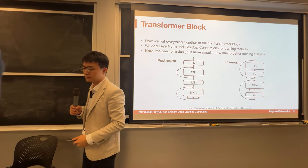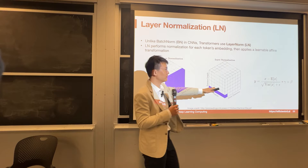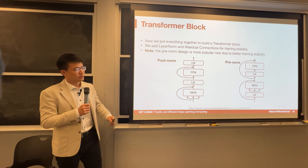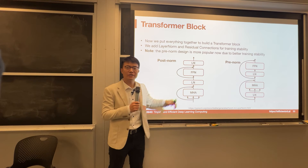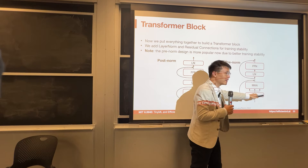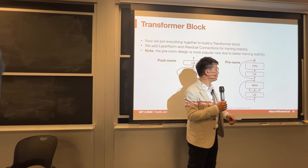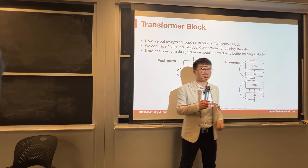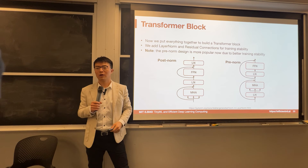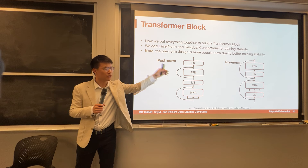The initial transformer used post-normalization: MHA first, then layer norm; FFN first, then layer norm. But recently, pre-norm is found to have better accuracy — you put the layer norm first, then MHA, which makes sense because you want to normalize each token to mean zero and variance one before computing the attention matrix. Pre-norm is more popular due to better training stability.